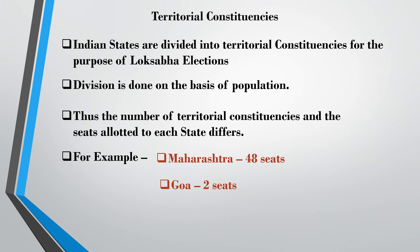In order to conduct the general elections, that is the Lok Sabha elections, the states are divided into territorial constituencies. This division is based on the population. Since the population of all the states is not the same, the number of territorial constituencies and the seats allotted in the Lok Sabha house is also not equal. Some states hold more seats than the other states. For example, the state of Maharashtra has 48 seats in the Lok Sabha house whereas Goa holds 2 seats. This is because Maharashtra is densely populated compared to Goa, which is the smallest state of India.